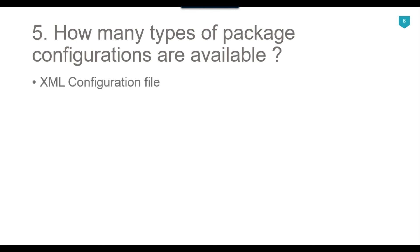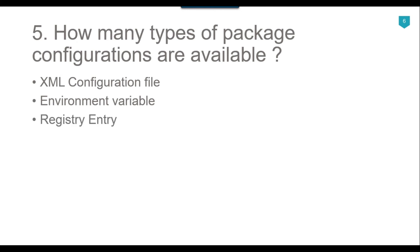The first configuration type is the XML configuration file, where we can set properties of the SSIS package and provide new values to SSIS variables. The second is the environment variable, which can be used to store a value for a particular SSIS variable.